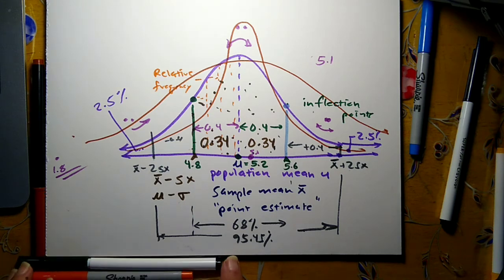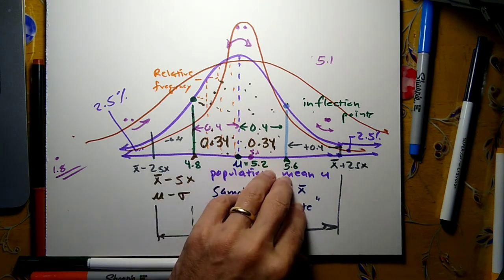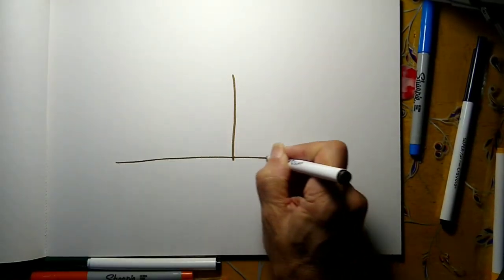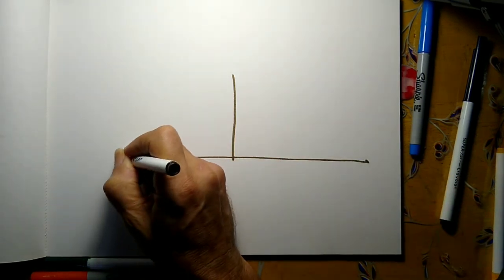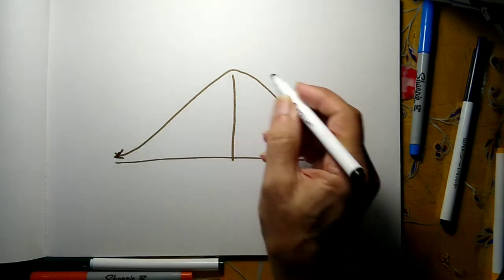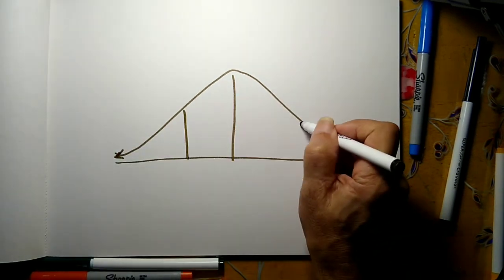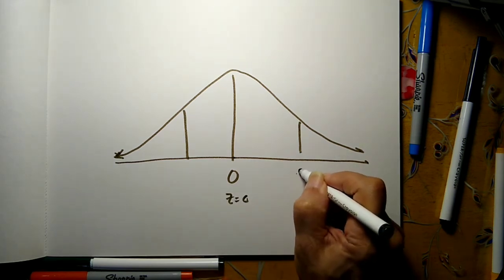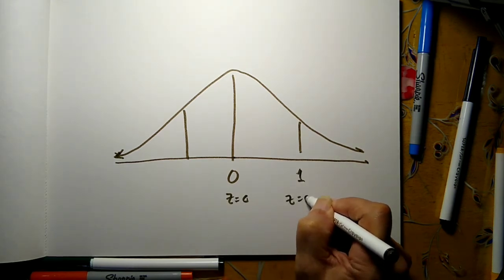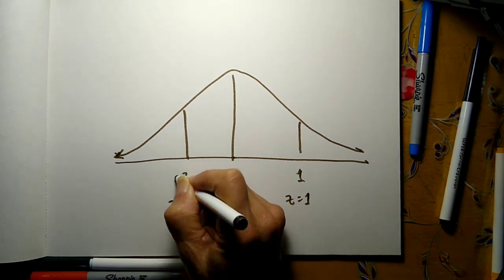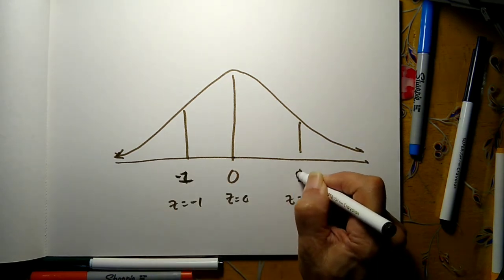You'll also see reference to the standard normal curve. And in the standard normal curve, that's the curve using the z-scores that we met earlier in the course. The standard normal curve has 0 under the center. This is z equals 0, and this is z equals 1. And this goes back to the z-scores that we met earlier in the course. This is negative 1, this is positive 1.